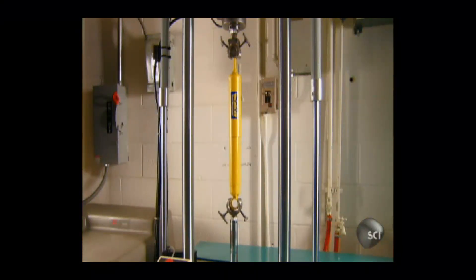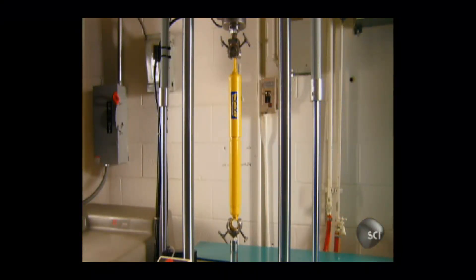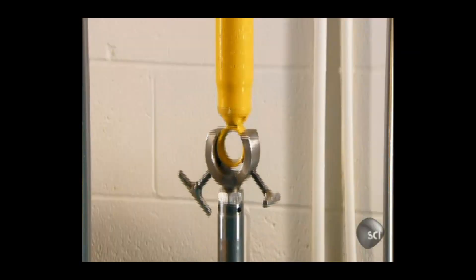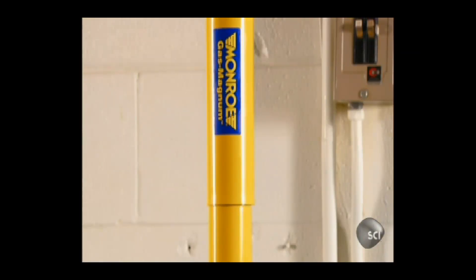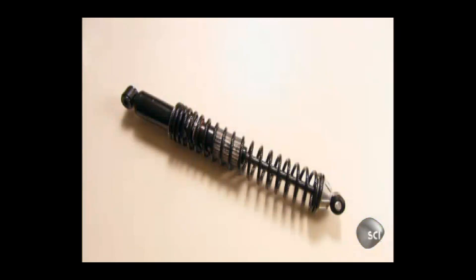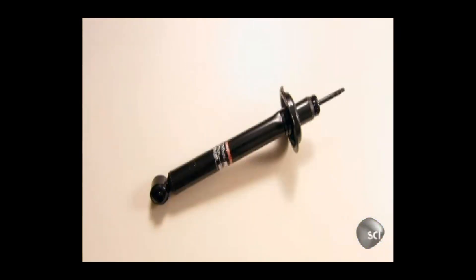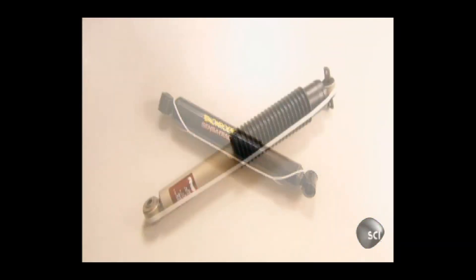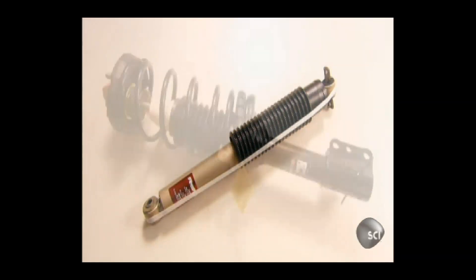In the factory's quality control lab, technicians use sophisticated equipment to evaluate how well a shock dampens movement at different speeds. The tube and valve configuration inside varies by vehicle, so the shocks on a ground-hugging sports car are quite different from those on a luxury sedan or light truck.